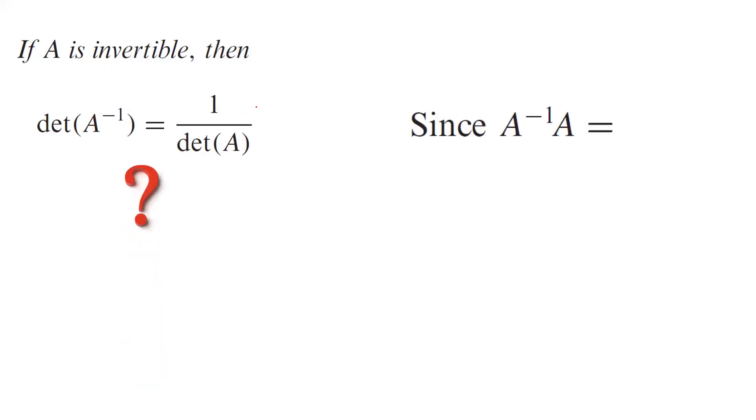We know that if you multiply A and its inverse, it's always equal to the identity matrix.